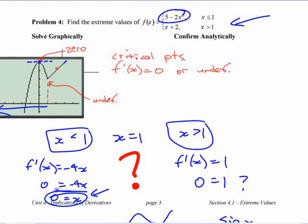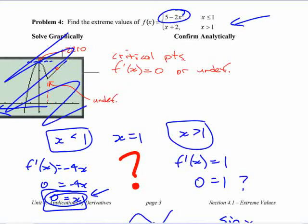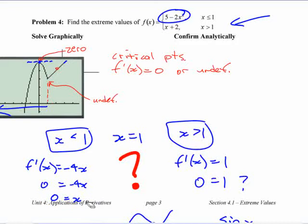We don't know at this point how to test, like without the picture, if we didn't have the picture, we don't know how to test what this is, a max, a min, or nothing. We will get to that soon. But for now, that's the one critical point that you find from this piece. This piece has no critical points because the derivative is never equal to zero and it's never undefined.